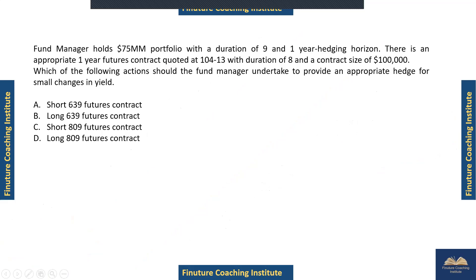So let's have a look at the question. There is a fund manager who has a $75 million portfolio with a duration of 9, and he has to hedge for one year. There is a one-year futures contract available at a given price and duration, and the contract size is about $100K. The question asks: which actions should the fund manager undertake to provide an appropriate hedge for a small change in yield?